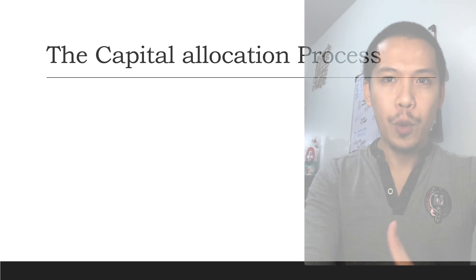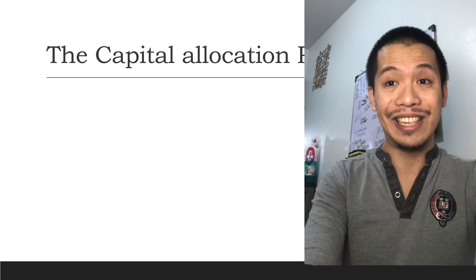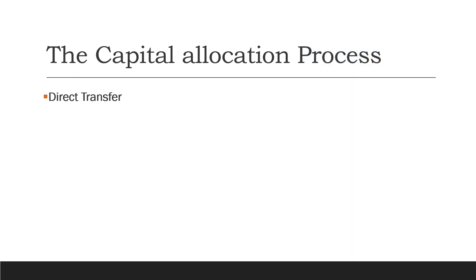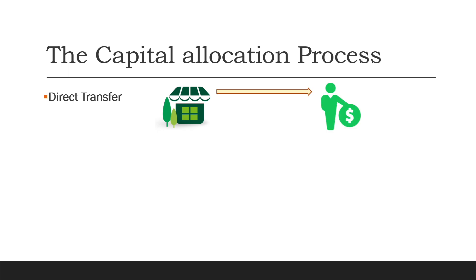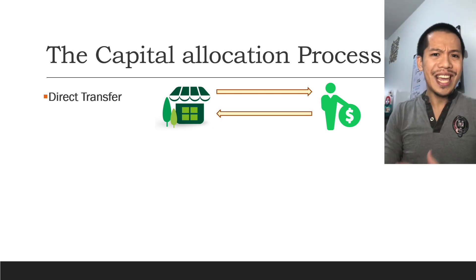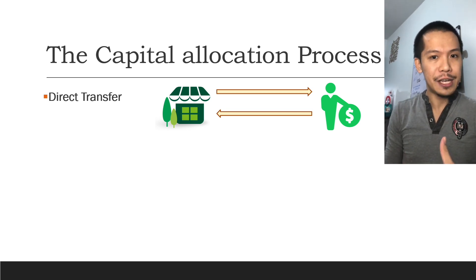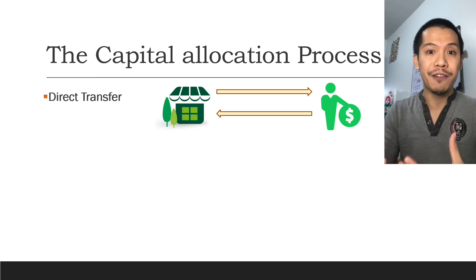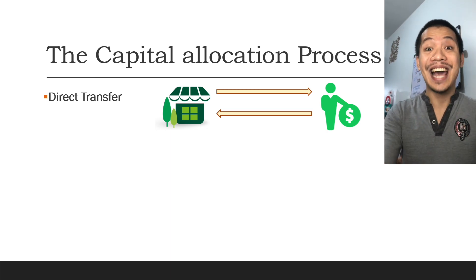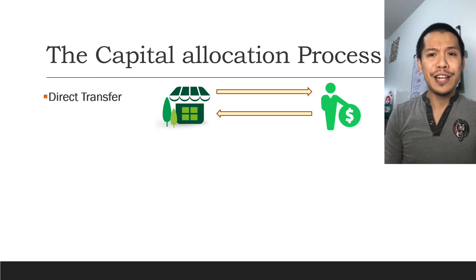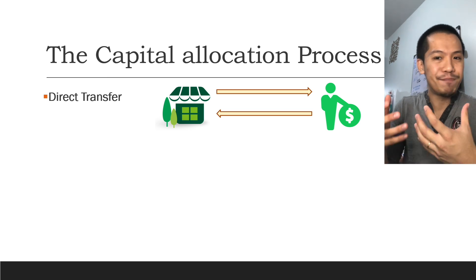The most obvious way one can think of in the allocation of capital is through a direct transfer. Imagine that your friend is starting a business and wishes you to help her. She may just approach you or anyone she knows and borrow money, or offer ownership in the business. You will gain a receivable by lending money, or in the case of ownership, you will gain equity in return for the money you provide, and hence there is capital allocation.